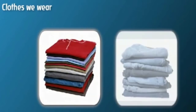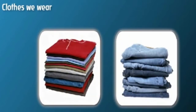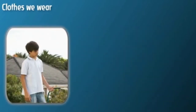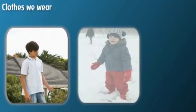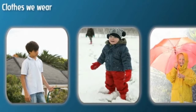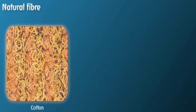We wear clothes to protect ourselves from heat, cold, dust, and rain. Clothing also makes us look smart. Different kinds of clothes are worn in different weather conditions. In summer we wear light-colored cotton clothes, and in winter we wear woolen clothes to keep us warm. We wear raincoats to protect ourselves from rain.